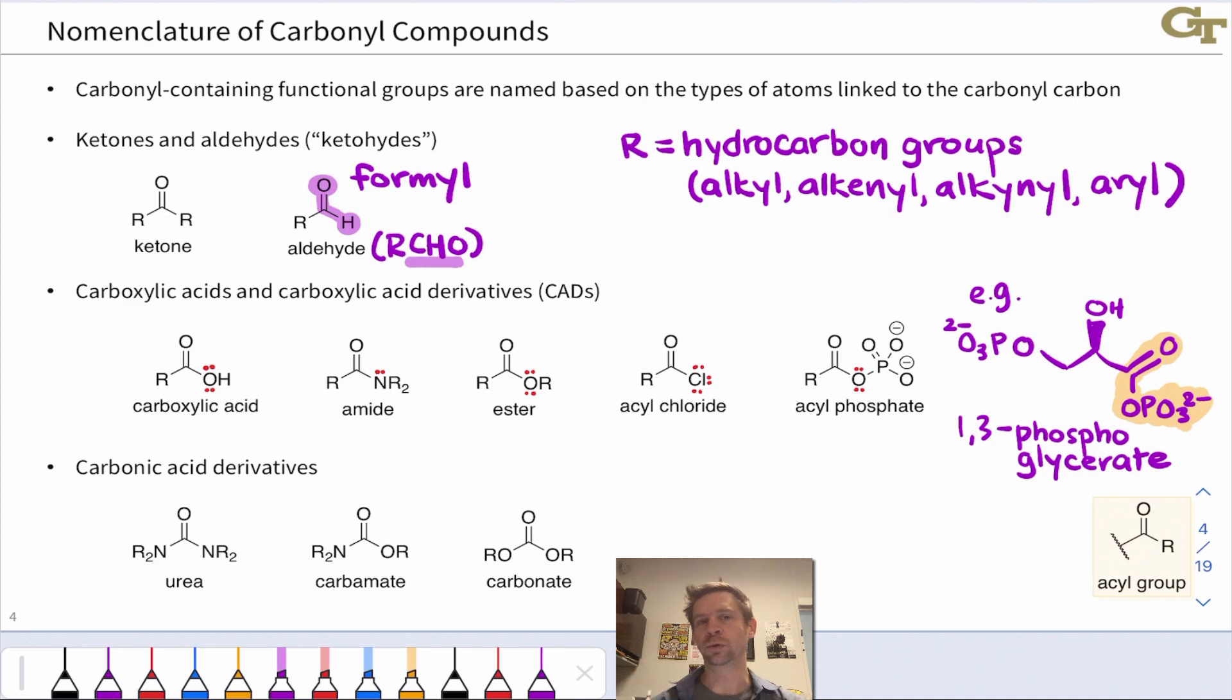What if we have two heteroatoms linked to the carbonyl carbon? In that case, we've got a derivative of carbonic acid, H2CO3, which is this compound right here. If we replace one or both of those OH groups with some other heteroatomic group, so that we've got two heteroatomic groups linked to the carbonyl carbon, that's a carbonic acid derivative.